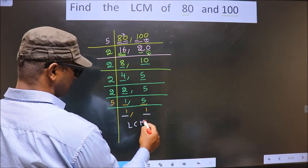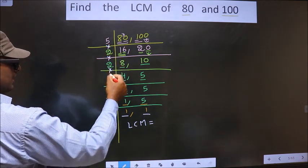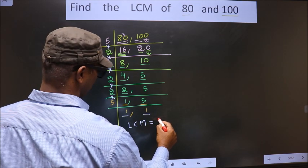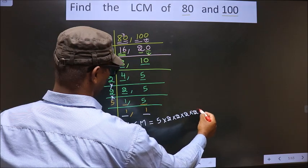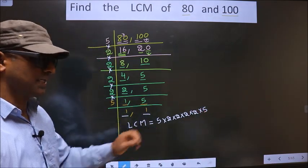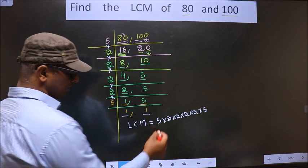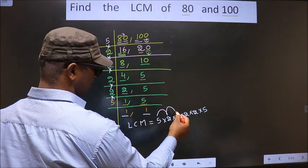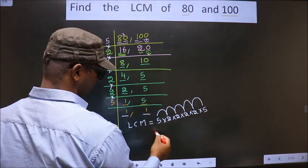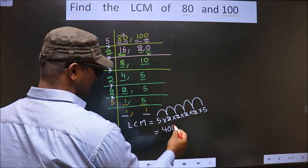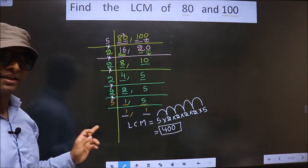Now we got 1 in both places. So our LCM is the product of these numbers, that is 5 × 2 × 2 × 2 × 2 × 2 × 5. Now let us multiply all these numbers: 5 × 2 = 10, 10 × 2 = 20, 20 × 2 = 40, 40 × 2 = 80, 80 × 5 = 400. So 400 is our LCM.